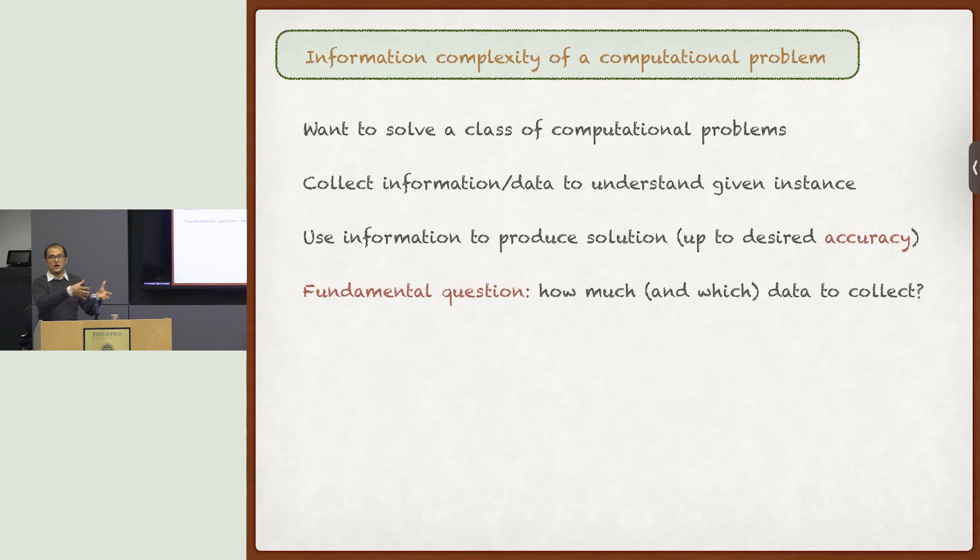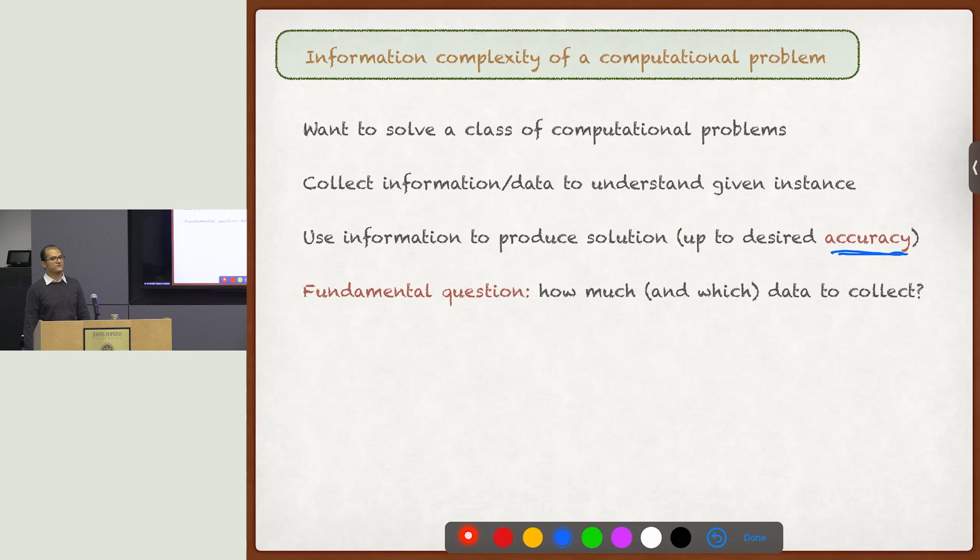So once the method collects this information, it then processes the information to produce a solution up to some desired accuracy, okay? And the fundamental question that I'm trying to sort of tease out is how much information do you need to solve the problem up to this desired accuracy, okay? That's really the fundamental question. Of course, this depends, this answer to this question depends on the actual problem, on the context. And also, just to point this out, it depends on the accuracy you're interested in. If you're not really interested in very accurate solutions, then you probably don't need that much data. You just want some route that takes you from Baltimore to New York. You probably don't need too much information about the road conditions. But if you want a very accurate solution, you need more data, okay? So it's a function of not just the parameters of the computational problem you're trying to solve, but also the accuracy you're interested in.